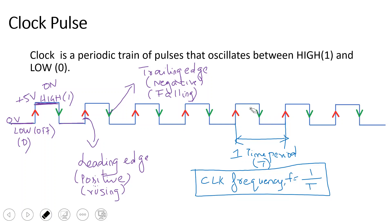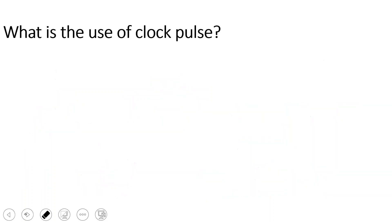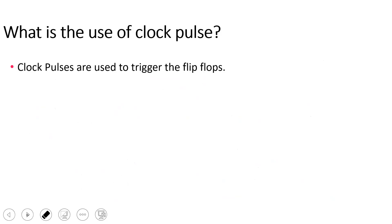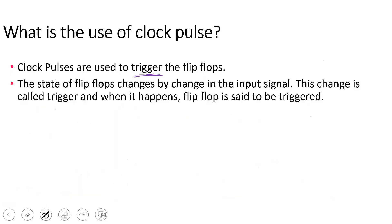So clock pulse has high and low states, leading edge, trailing edge, and time period. Clock frequency CLK represents the clock, and clock pulse frequency is represented as f = 1/T. This is all about clock pulse and how it is used in a particular state.